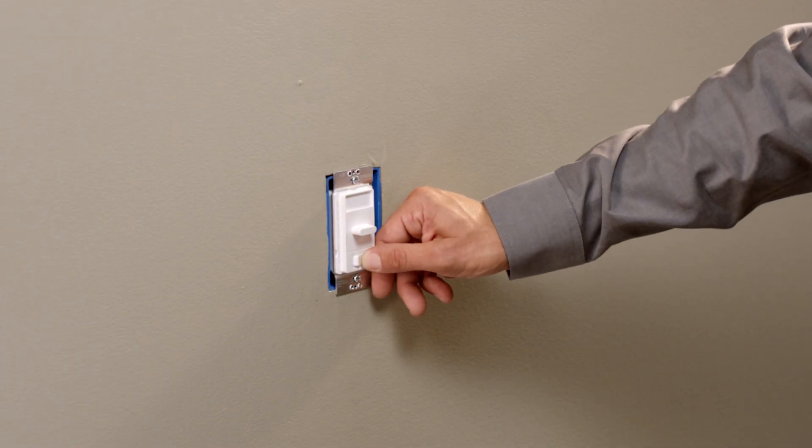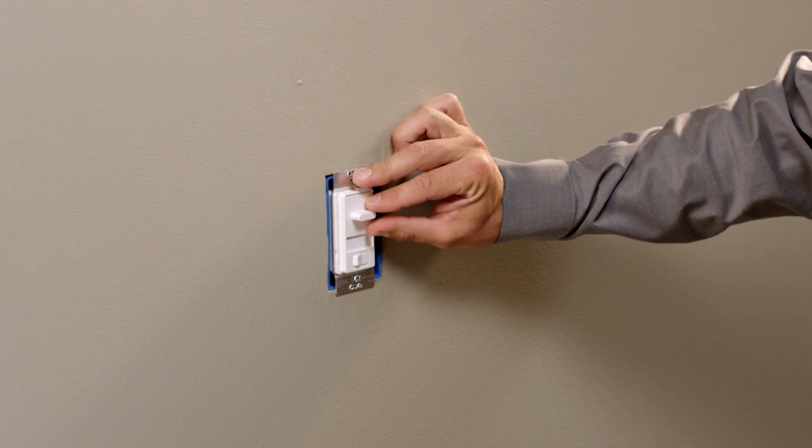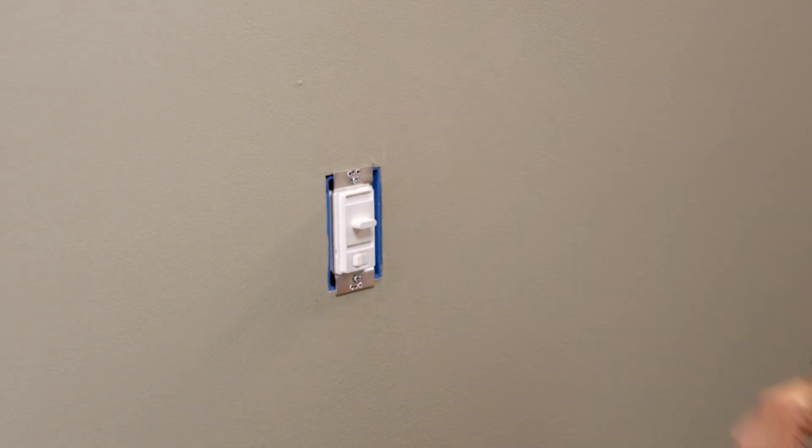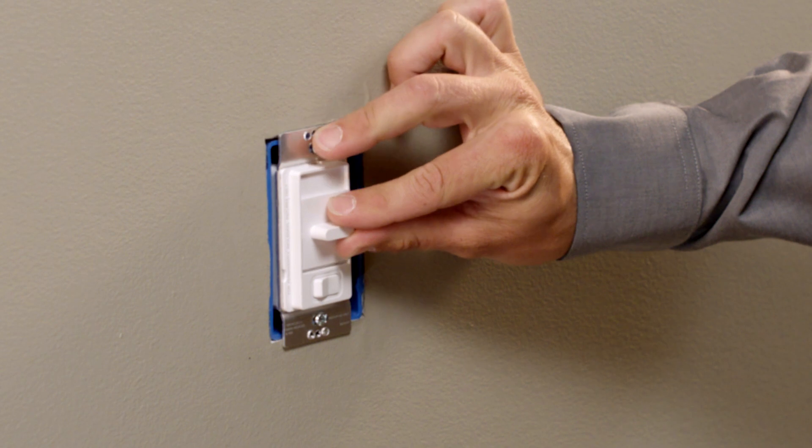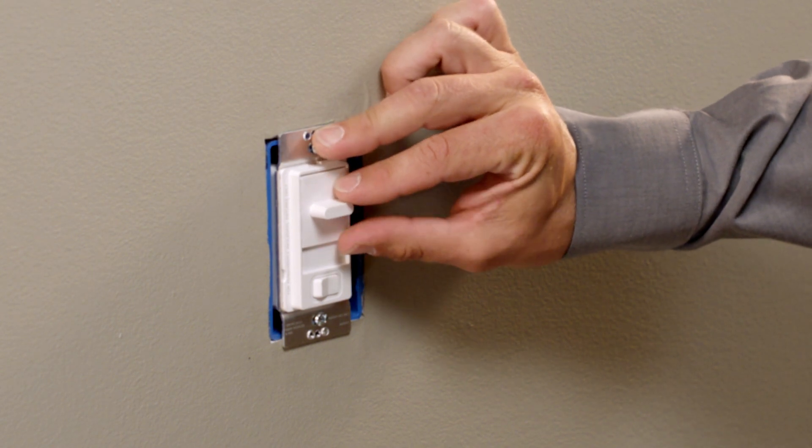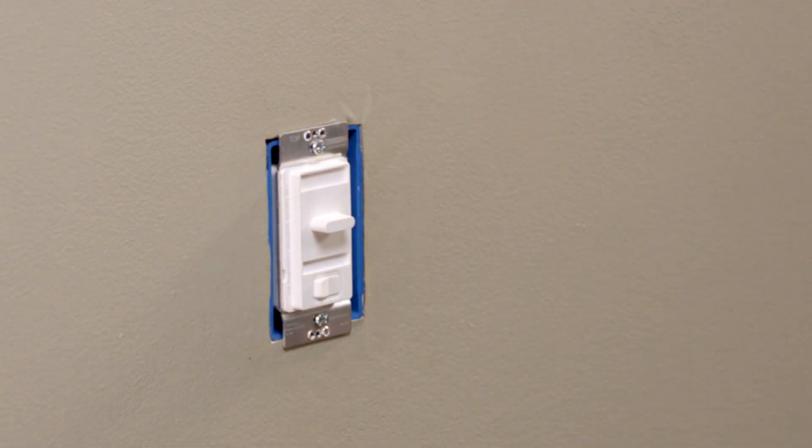Prior to installing the wall plate, turn the power back on and test the slide dimmer to make sure everything's working properly. Slide the dimmer all the way to the top for full brightness and then down to just before the bulb goes off.